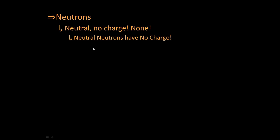Now, neutrons tend to mess with people because neutrons are neutral. Neutral neutrons. They have no charge. None. So I'm going to say it again. Neutral neutrons have no charge. They're neutral. They have no charge. They're not plus. They're not minus. They're neutral. They have no charge.